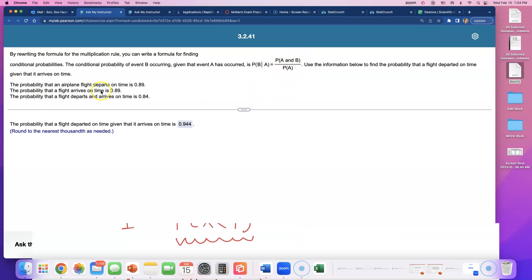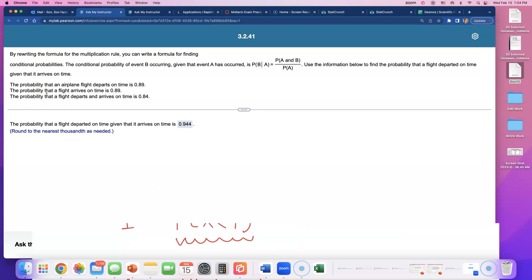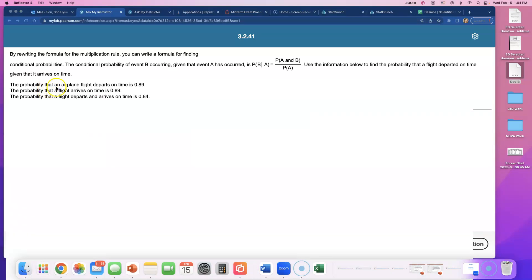Alright, they gave us this. I think we're going to try to use this formula to find some probabilities. What's important is rewriting these words into probability symbols. When they said the probability that an airplane flight departs on time, the probability of on time equals 0.89. That's pretty good, right? There's close to a 90% chance this flight will leave on time.